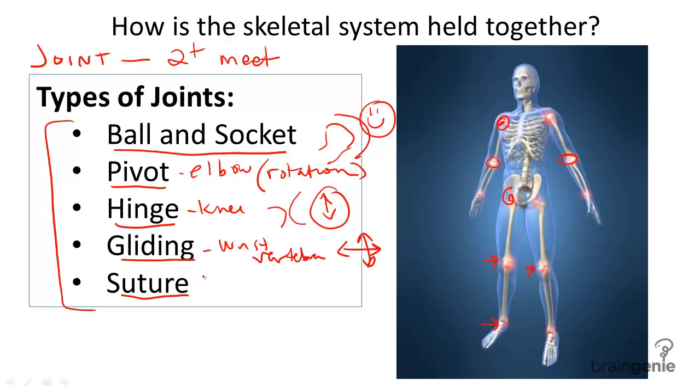And skull joints, or suture joints, are where flat bones of the cranium are attached. And these are immovable.